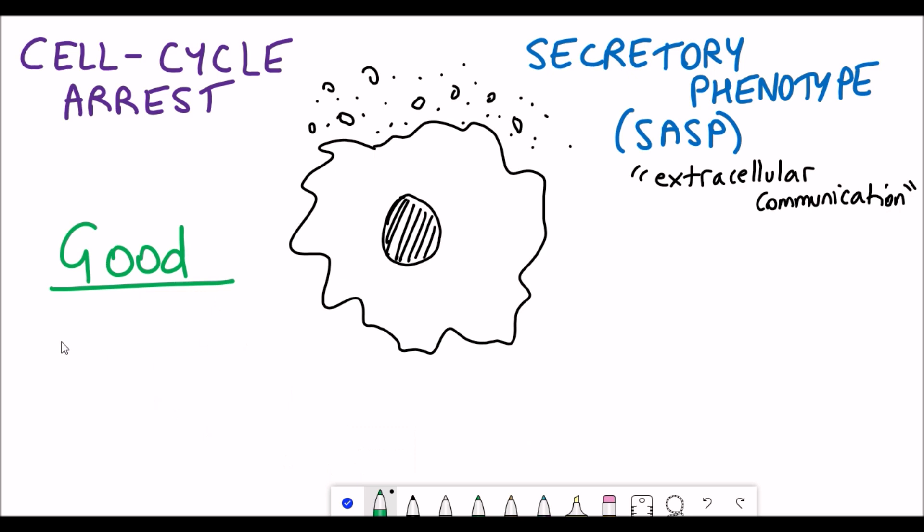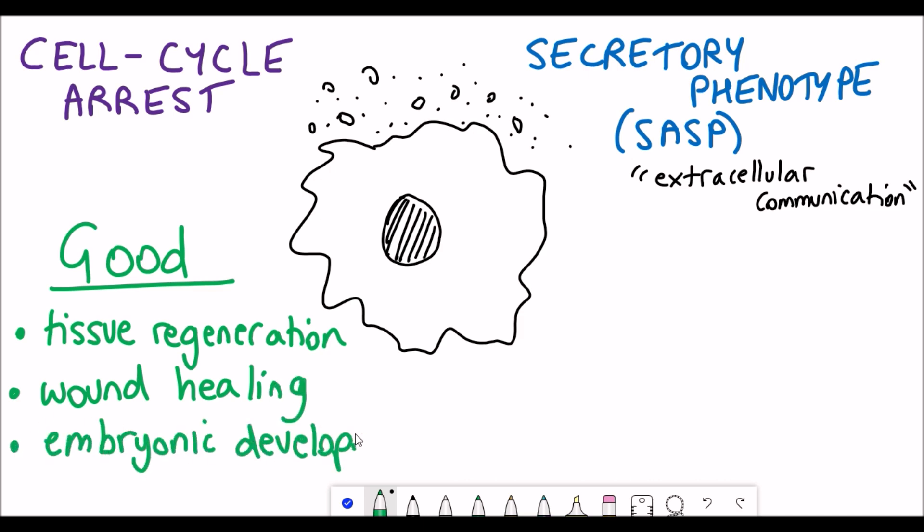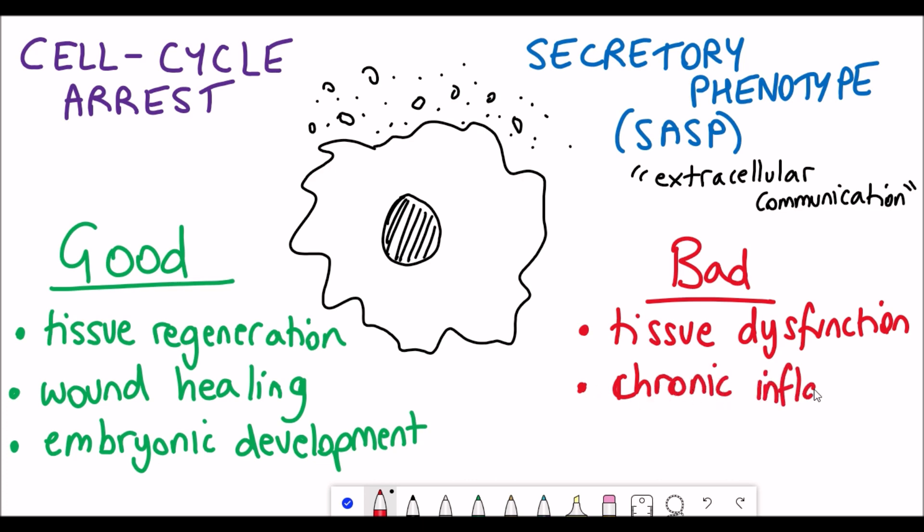Senescent cells can be considered a good thing or a bad thing depending on context. Senescent cells are thought to be good for aiding tissue regeneration, wound healing, and embryonic development. However, some of these factors are inflammatory factors and chronic inflammation is associated with cancer, aging, and tissue disruption.